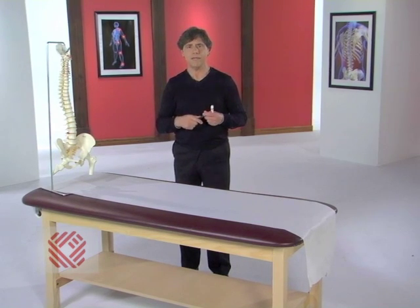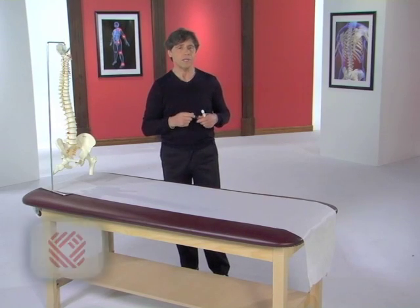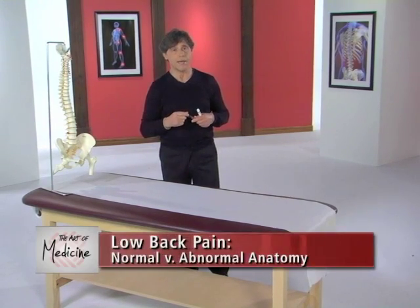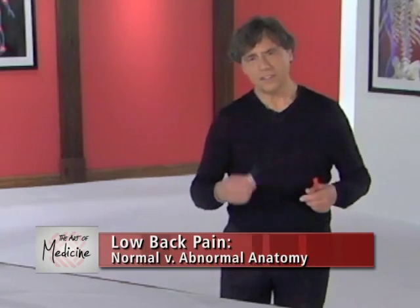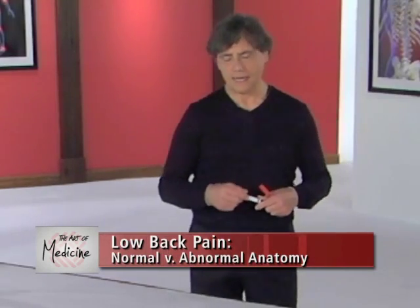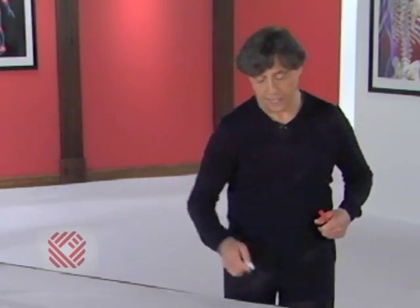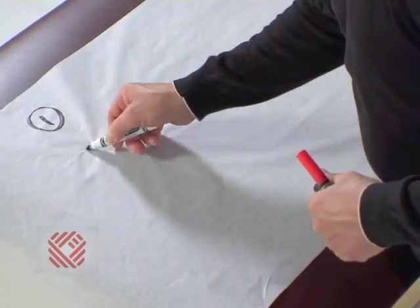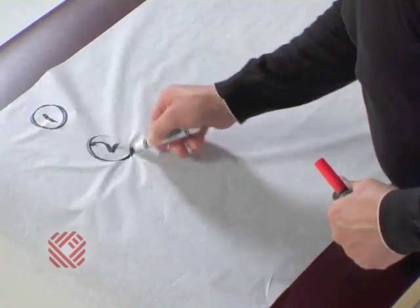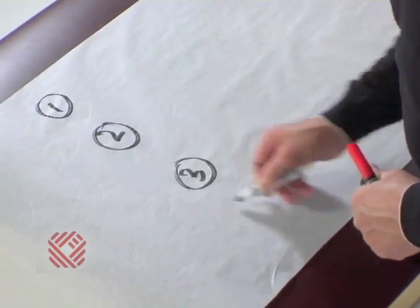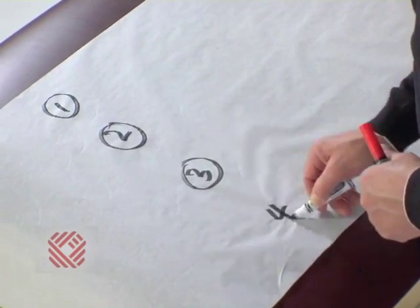But now let's first take a look at the anatomy, or the parts list, of your back. When I talk about the anatomy or parts list of the lumbar spine, I like to talk about four categories: one, two, three, four.